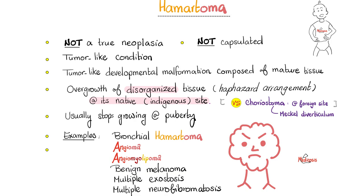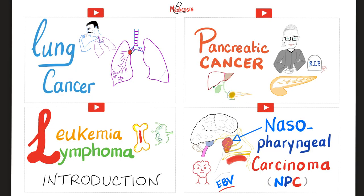Give me examples of these hematomas: bronchial hematoma, angioma, angiomyolipoma — which is associated with tuberous sclerosis — benign melanoma, not to be confused with malignant melanoma, multiple exostosis, as well as multiple neurofibromatosis. If you have studied neurofibromatosis disease, you would recall that we have multiple hematomas.